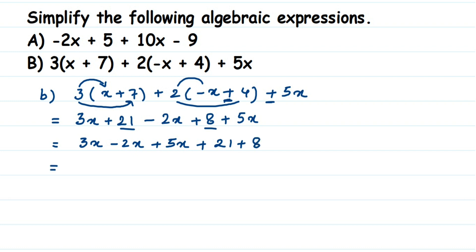Now let's add and subtract the like terms. 3x plus 5x — both positive — gives 8x. Then 8x minus 2x gives 6x. For the constants, 21 plus 8 is 29. So the final answer is 6x plus 29. We cannot simplify further because one term has a variable and the other is a constant.